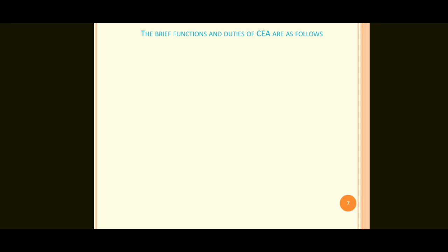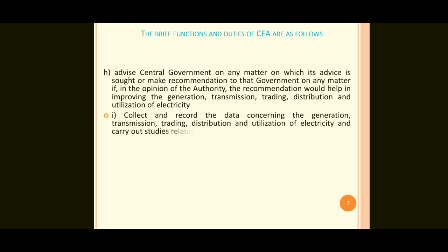Point H: advise the Central Government on any matter on which its advice is sought, or make a recommendation to the government on any matter if, in the opinion of the authority, the recommendation would help in improving the generation, transmission, trading, distribution and utilization of electricity.